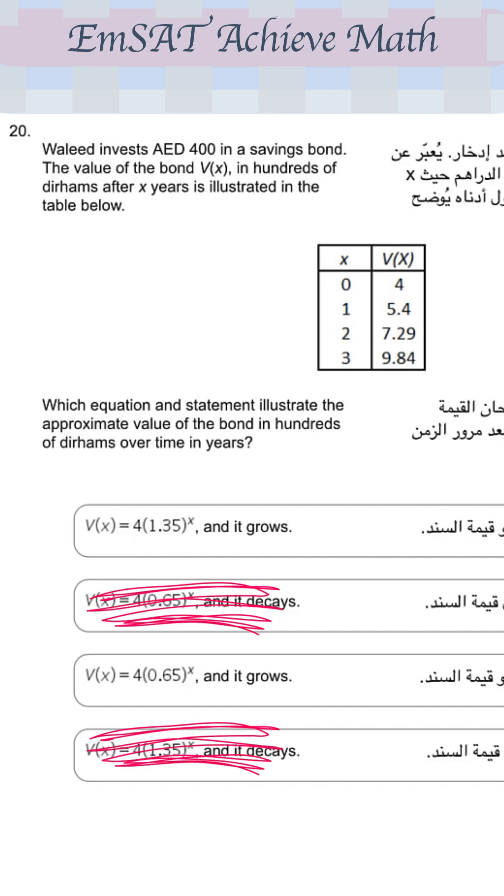So we can remove the decays from the answers. And since it is increasing, the number inside the brackets, if it's smaller than 1, then it is decay. If it's greater than 1, then it is growth.